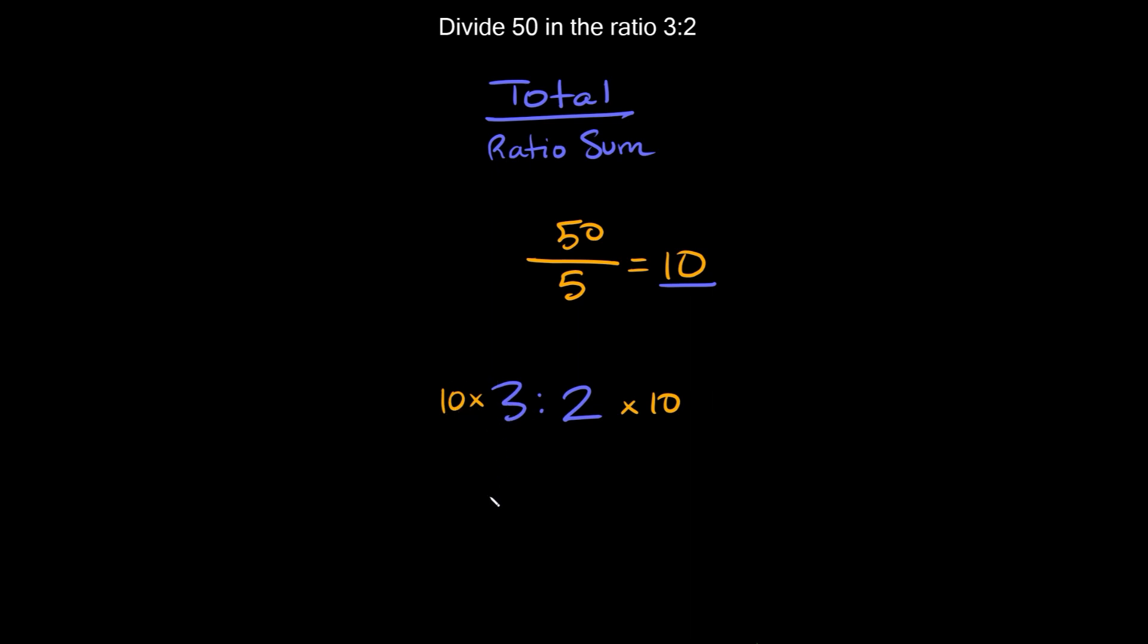So on the left side 10 times 3 is equal to 30, and on the right side 2 times 10 is equal to 20. So then our new ratio, which as you can see adds up to 50, is going to be 30 to 20.